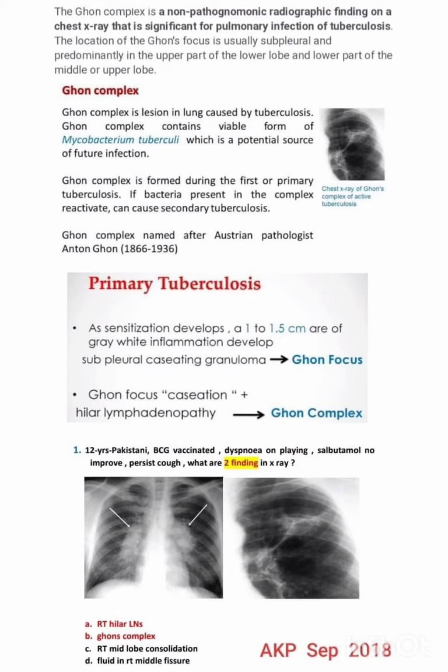The Ghon complex is a lesion in the lung caused by tuberculosis. It contains a viable form of Mycobacterium tuberculosis, which is a potential source of future infection. The Ghon complex is formed during the first or primary tuberculosis infection. If the bacteria present in the complex reactivate, they can cause secondary tuberculosis.